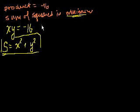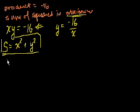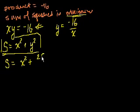That's where the constraint equation comes in handy. We can substitute for y. Dividing both sides by x gives y equals minus 16 over x. Substituting into s, the sum of squares becomes x squared plus y squared — and since y is minus 16 over x, y squared is 256 over x squared. So s equals x squared plus 256 over x squared.